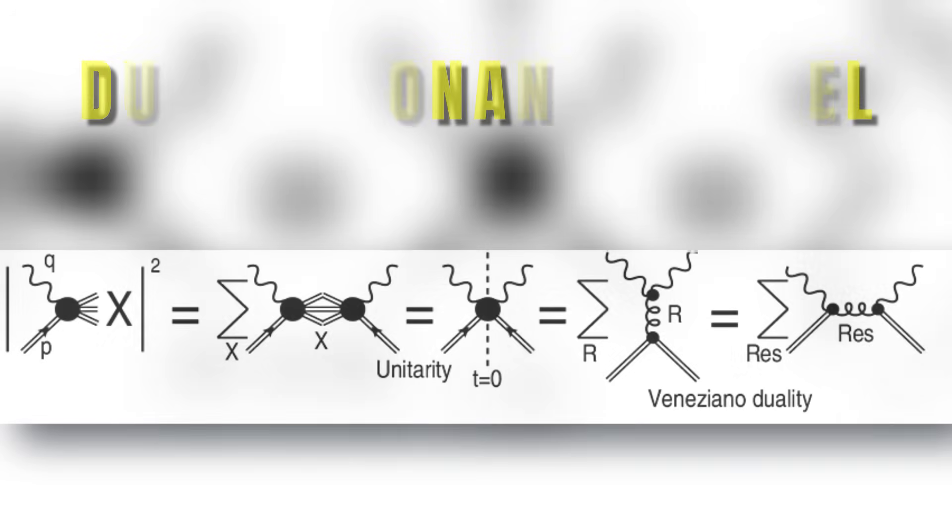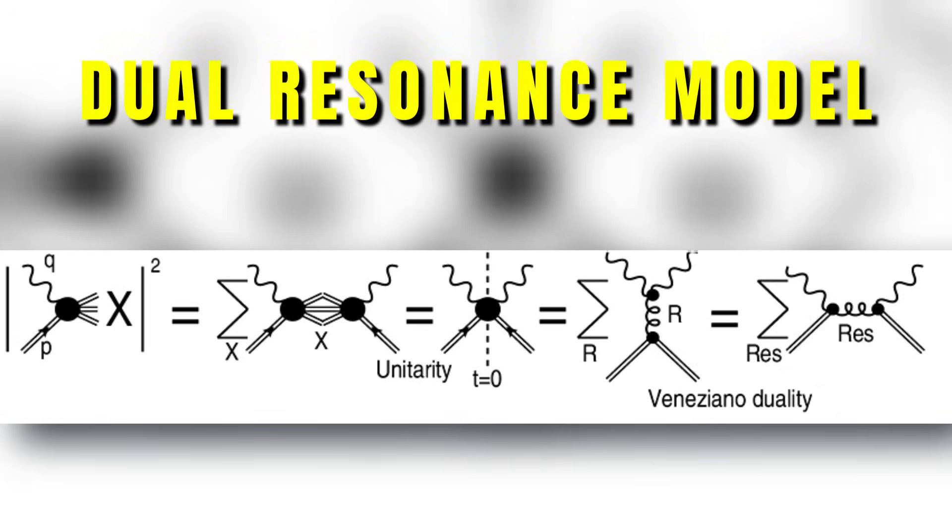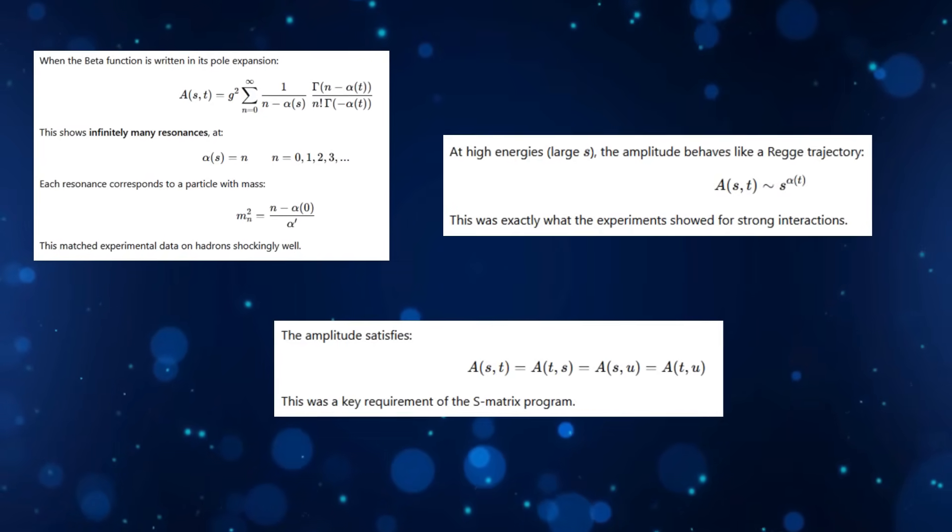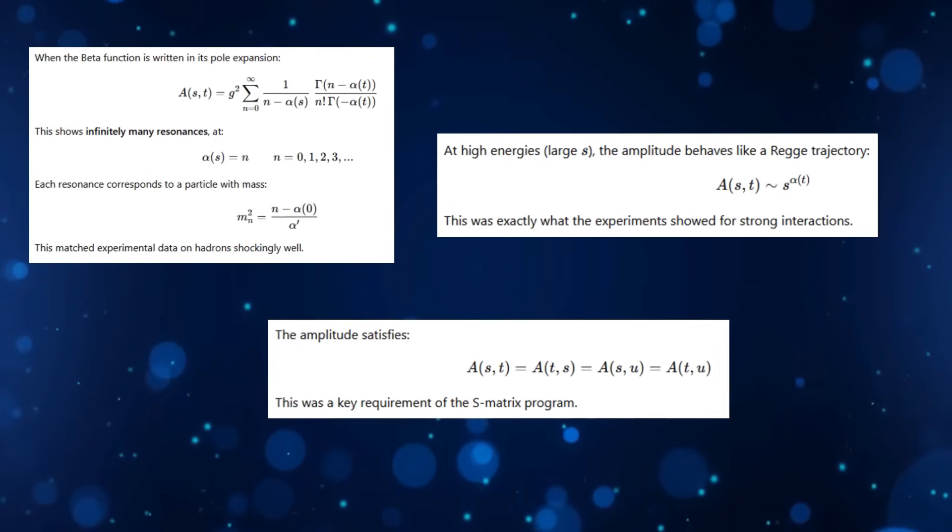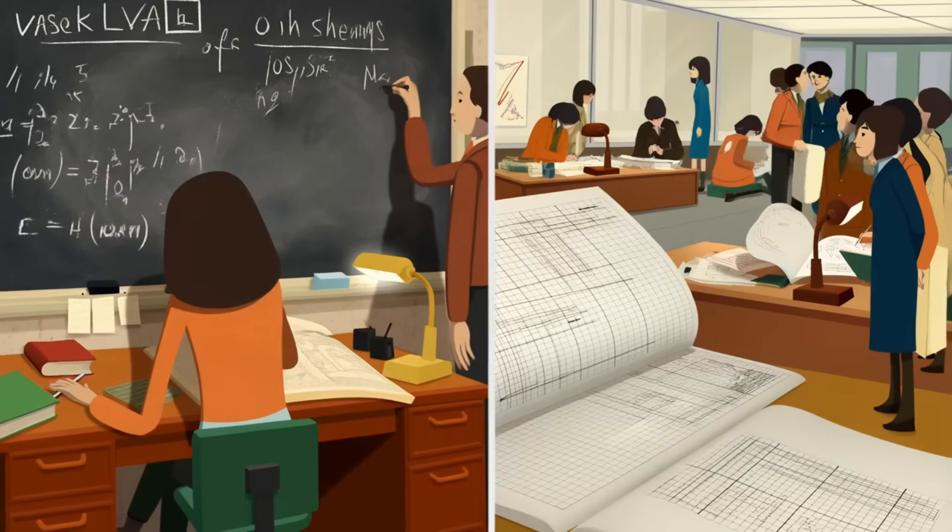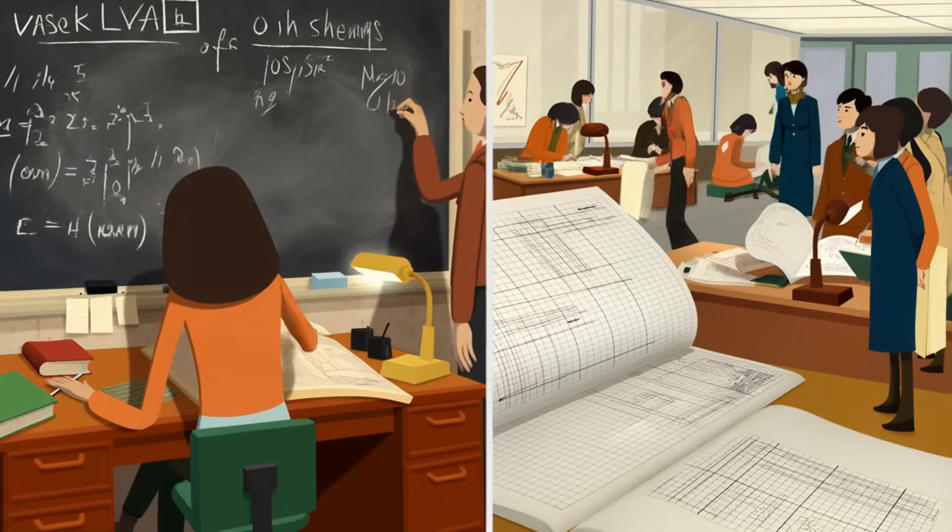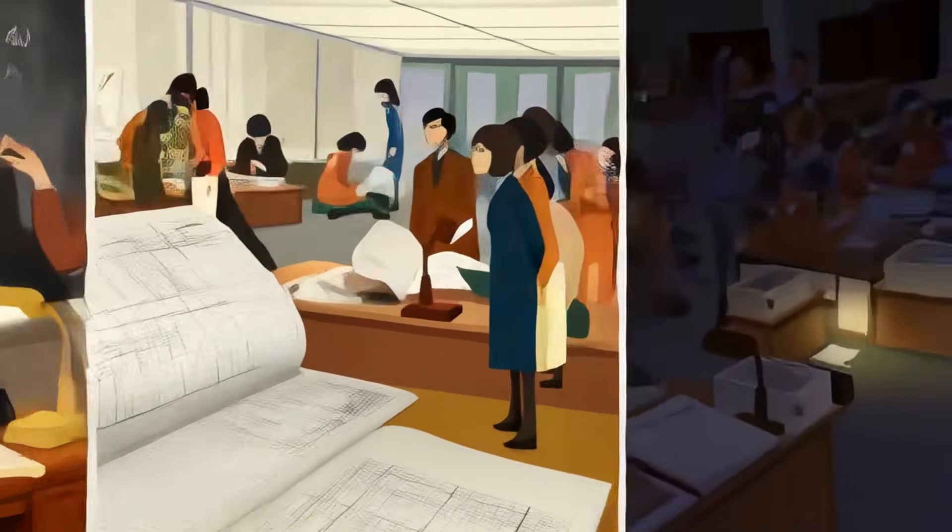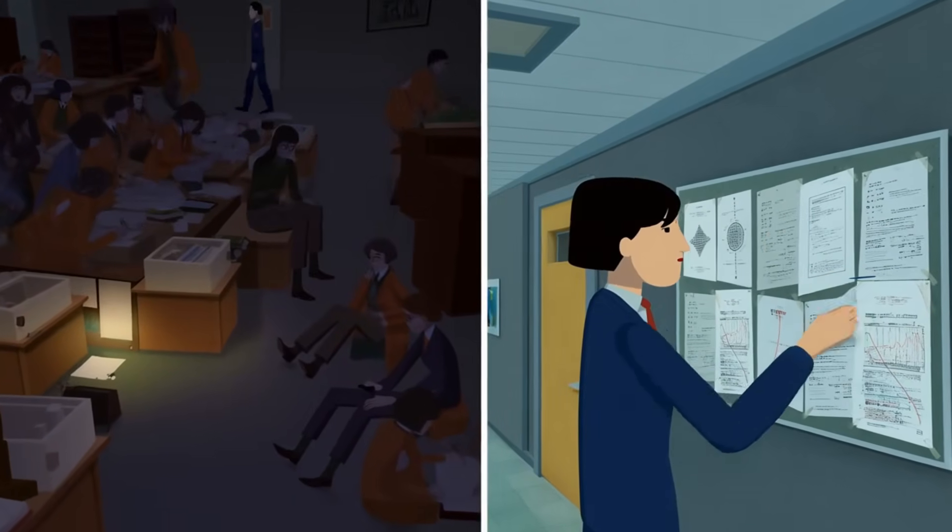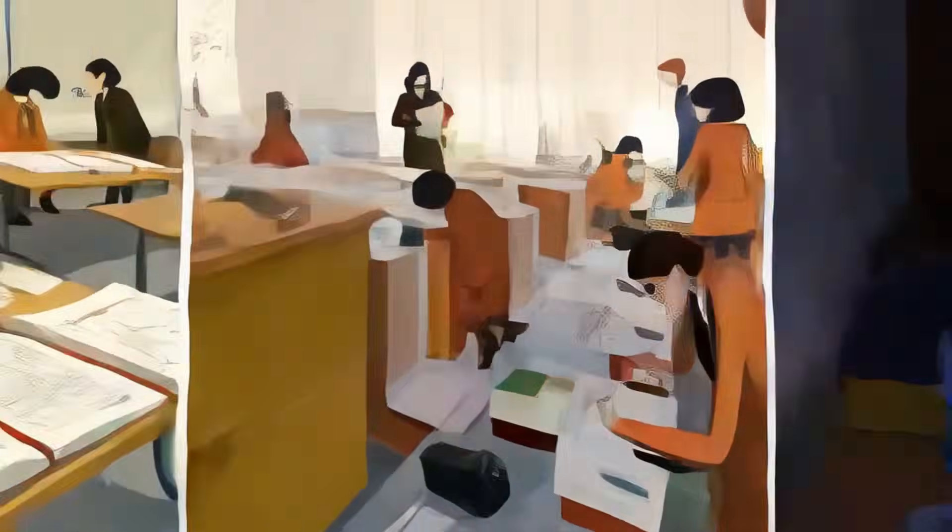By 1969, the dual resonance model, Veneziano's amplitude, was the hottest idea in theoretical physics. It seemed to explain everything about the strong nuclear force, the resonances, the patterns, the symmetries. Dozens of papers poured out every month. Young physicists around the world built new versions, new amplitudes, new predictions. For a moment, it looked like the secret of the strong force had been found. But then came the problems.